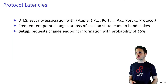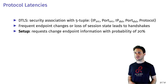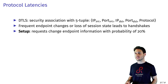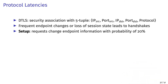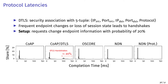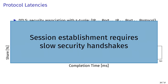In our last evaluation, we inspect protocol latencies on frequent endpoint changes. DTLS uses the 5-tuple—IP source, source port, IP destination, destination port, and protocol—to identify communication endpoints. We send requests from the same partners but with differing endpoint information every fifth request. All deployments except CoAP over DTLS do not use endpoint info to identify security contexts, so they perform similarly with completion times mostly in the 10 to 30 millisecond range. CoAP over DTLS shows about 20% of requests at the 100-millisecond mark, which is the duration for a full handshake of 10 messages, demonstrating that session establishment causes slow security handshakes with frequently changing endpoint information.